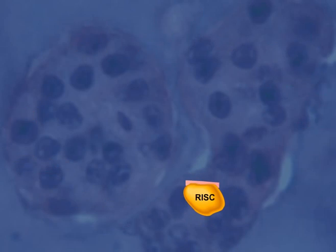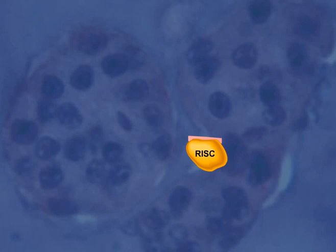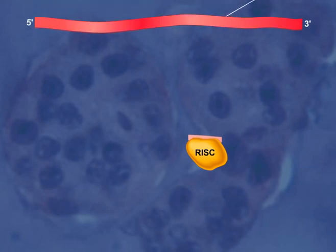The silencing complex can then associate with cellular messenger RNA that has a region of sequence homology with the RNA fragment in the RISC.